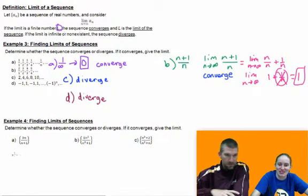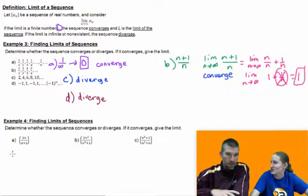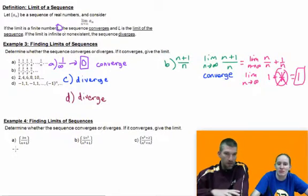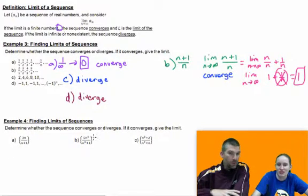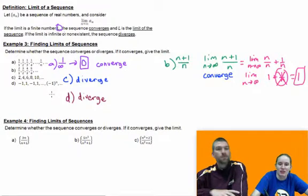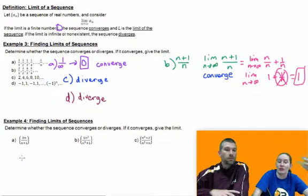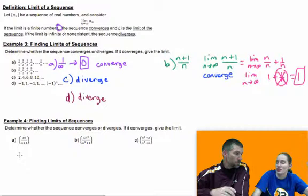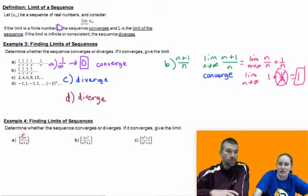Example 4. Finding limits of sequences. Determine whether the sequence converges or diverges. If it converges, give the limit. Didn't we just do that? But now they're doing it. They're telling us a little differently. They're giving us the actual thing. And so, this is where, if you graph it or you remember your horizontal asymptote rules...